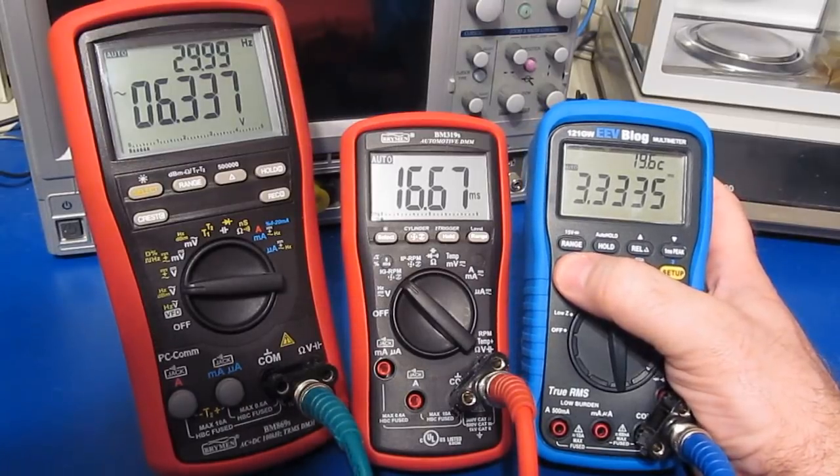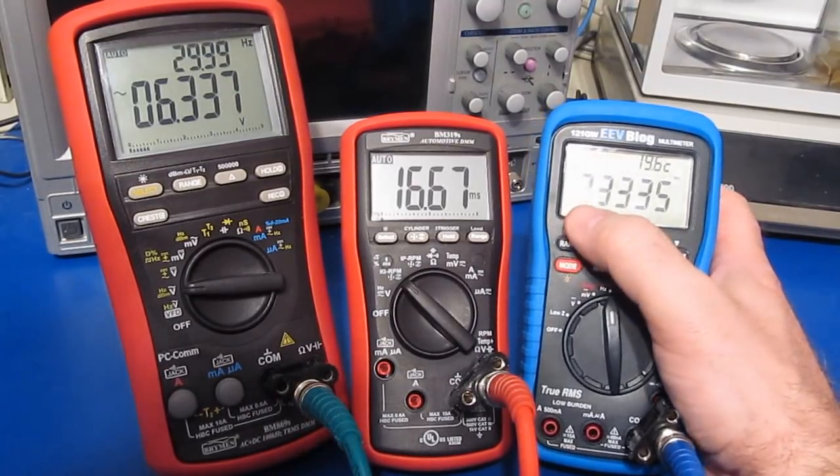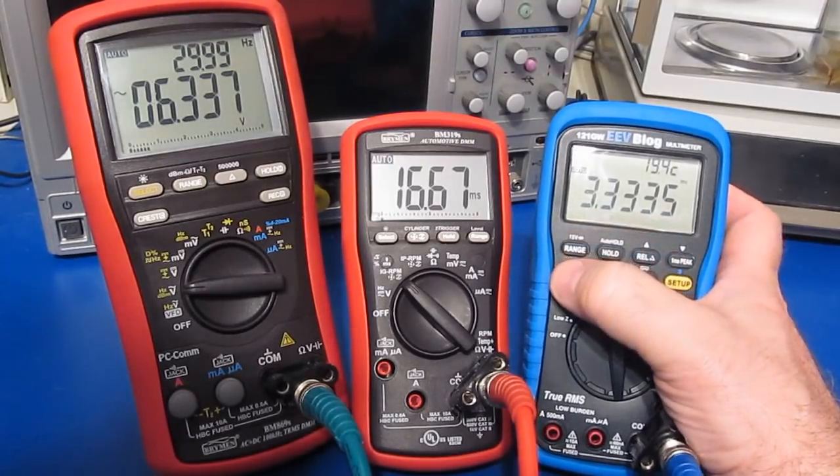Now the UEI meter should be displaying 33.333 milliseconds for the period, but instead you can see it's displaying 3.33.